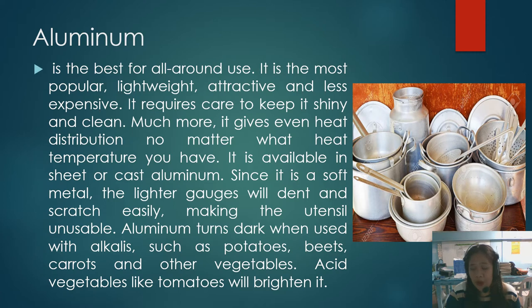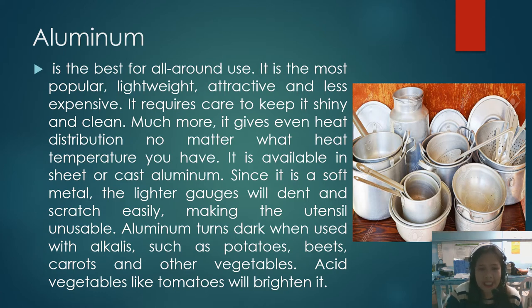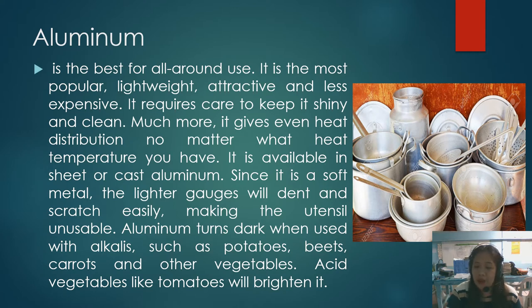In our homes we use steel wool to keep aluminum shiny. Aluminum gives even heat distribution no matter what the temperature. It is available in sheet or cast aluminum. Since it is a soft metal, lighter pieces will dent and scratch easily, making the utensil unusable. Aluminum turns dark when used with alkalis such as potatoes, beets, and carrots, while acid vegetables like tomatoes will brighten it.